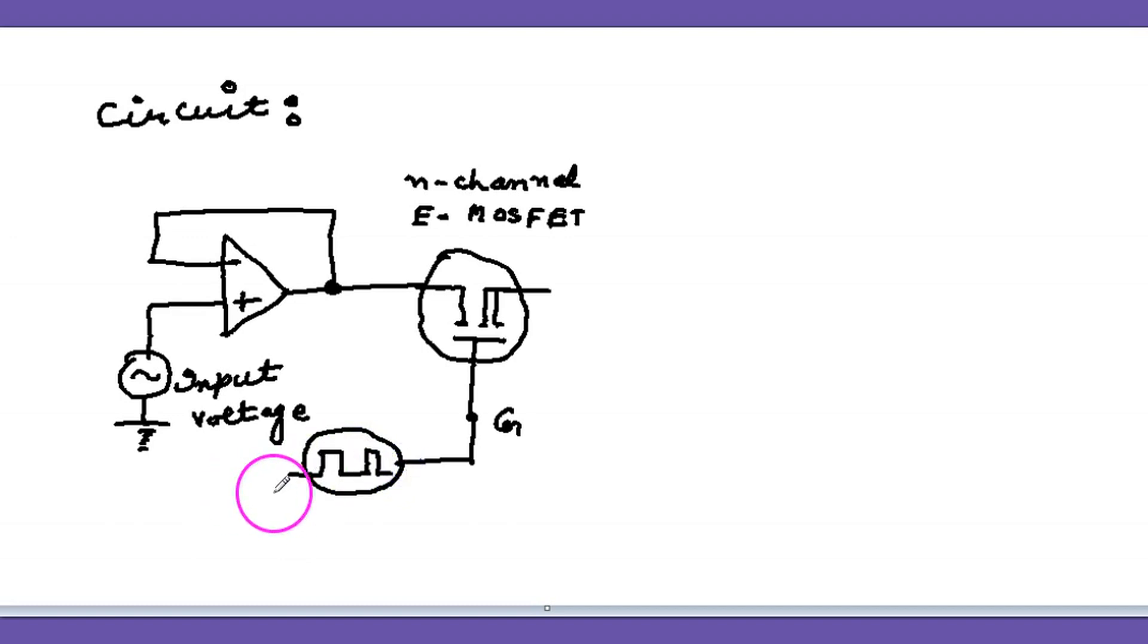So when the square pulse comes, the gate opens, otherwise it remains closed. So this is the control voltage. It makes the N-channel MOSFET on and off.